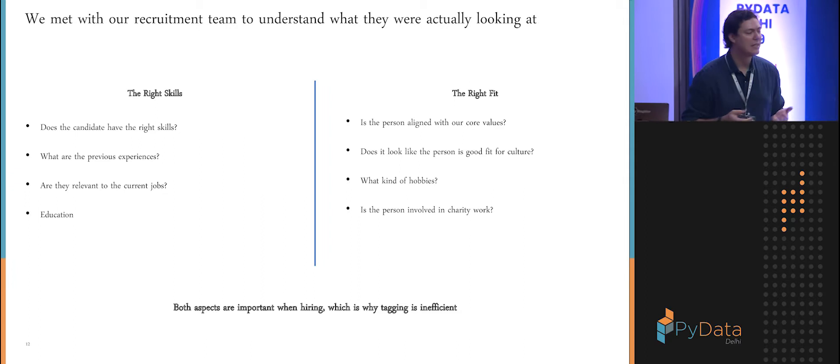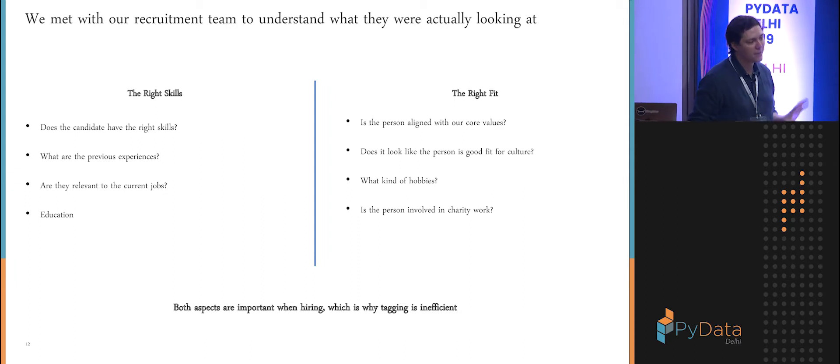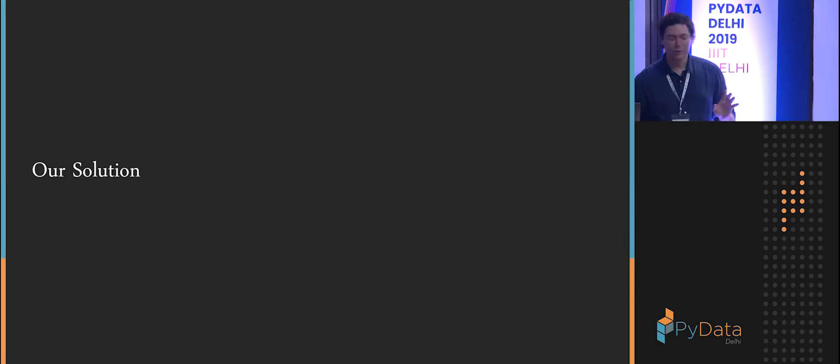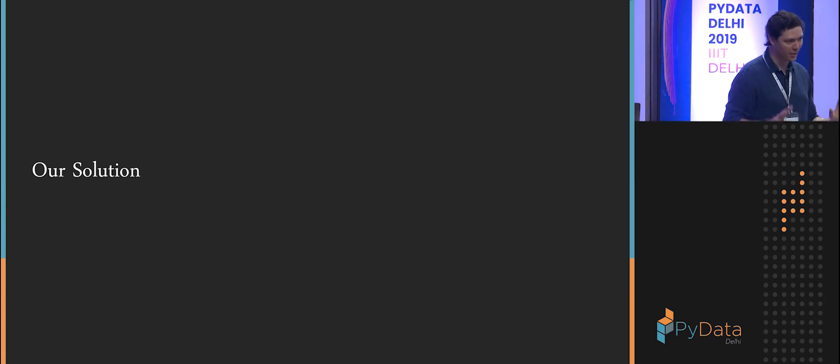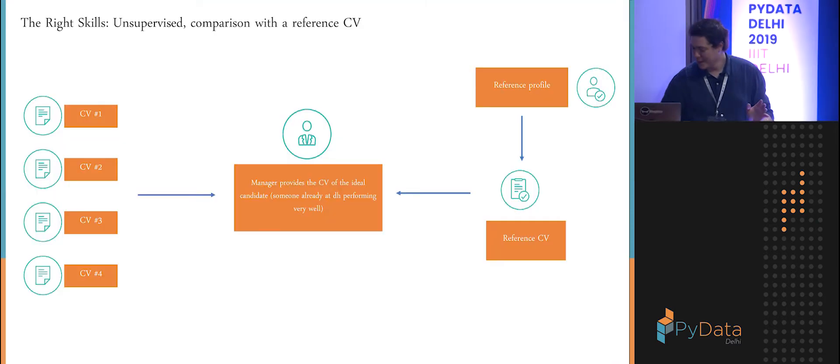So we cannot replace everything, but just to see is there a way where we can help them, support them. So we met with them to try to understand what they actually look into in a CV. Is it just about skill or is it other things? There were two main areas that they look at when someone applies to a role. There are the skills, of course. Does a candidate have the right skills? Do you need Python and Spark? Where did you go to school? What have you done before? Hobbies and so on - the classic CV. But there is also something that they try to feel.